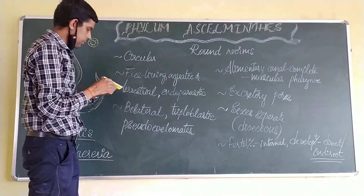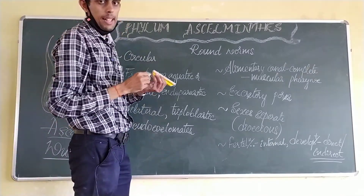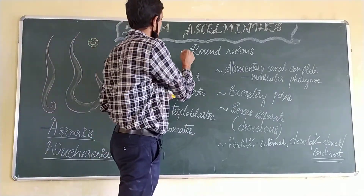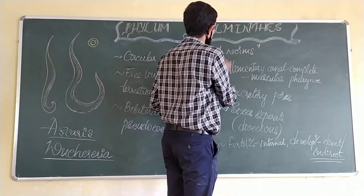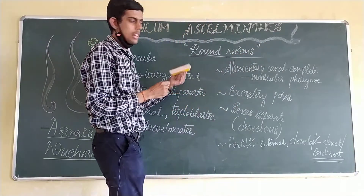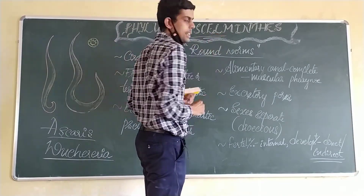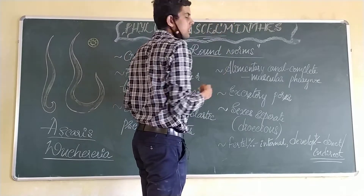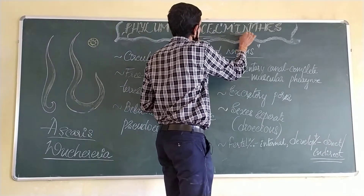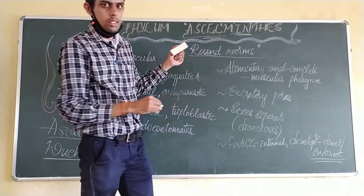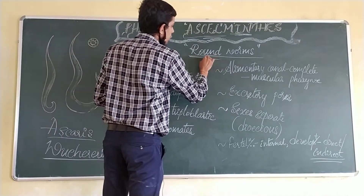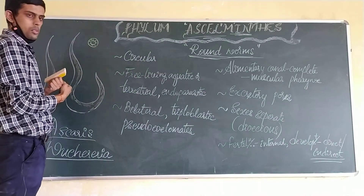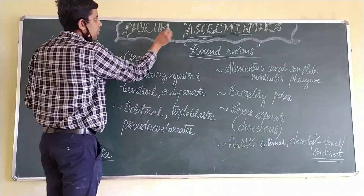In the previous class we discussed the final phylum Platyhelminthes, also called the flatworms. In this class we shall discuss the phylum Nematoda, also called Aschelminthes. Here 'Ascal' refers to browning and 'helminthes' refers to worms. So in short, they are commonly called roundworms.